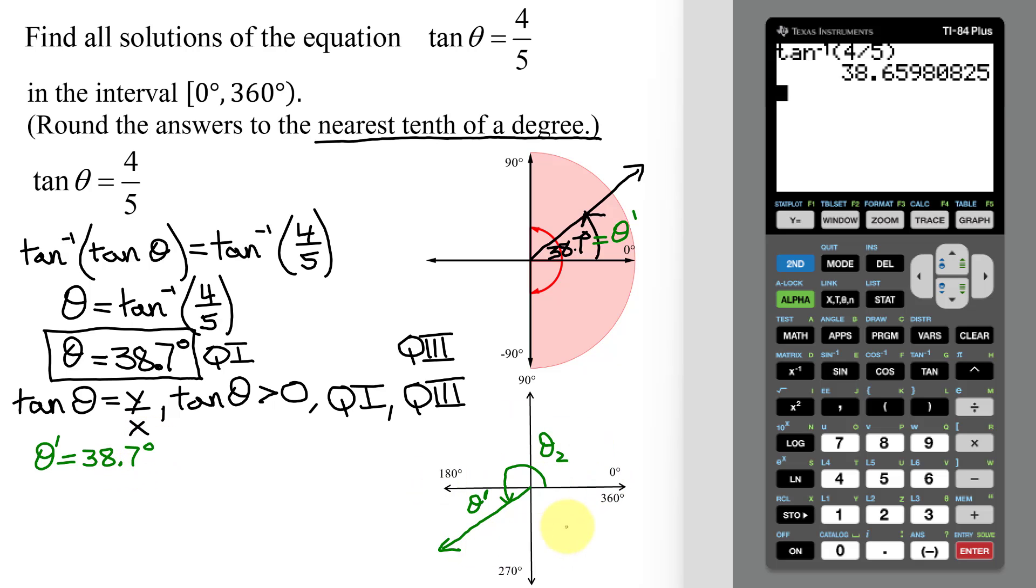Now, looking at this picture, how am I going to find the value of theta sub two? Well, it's 180 degrees plus my reference angle. So it's 180 degrees plus 38.7 degrees. So my second solution equals 218.7 degrees.